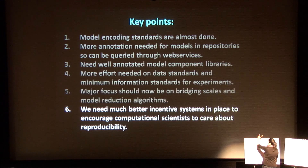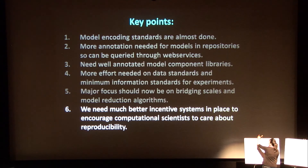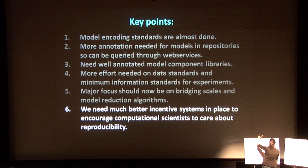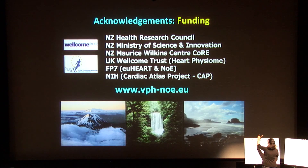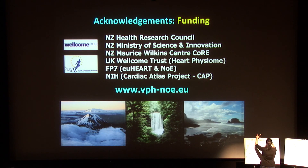We need much better incentive systems to encourage computational scientists to care about reproducibility — that has to be led by the journals themselves. And just to acknowledge funding sources for a lot of the work we've done. Thanks very much.